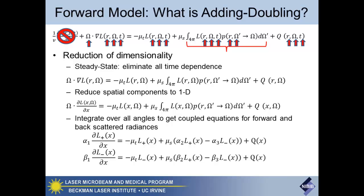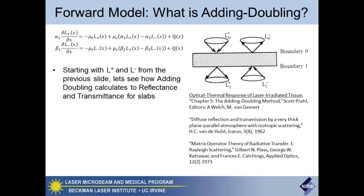What adding-doubling really comes down to describing is: if you look at a slab of tissue with optical properties within it, and there are some source — the Q term in the equation — given optical properties within the tissue, you can calculate what the radiance outside of that tissue will be, both transmitted through and reflected back.